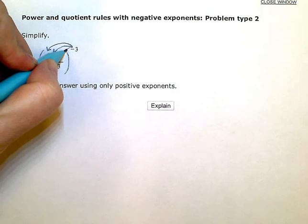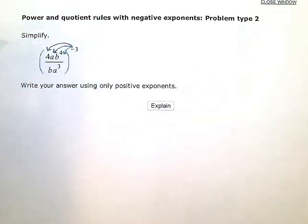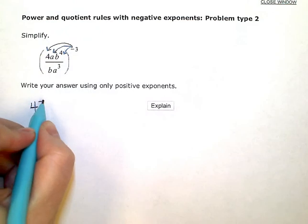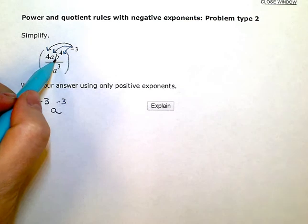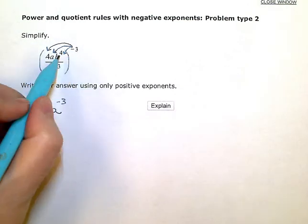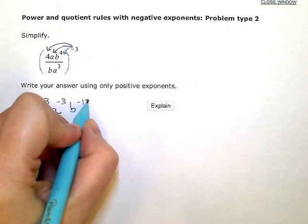I can take this negative exponent and apply it to every factor on the inside of the parentheses. So, in the numerator, I'm going to have 4 to the negative third, a to the negative third, and b, I can multiply these two exponents, so I'm going to have b to the negative twelfth.